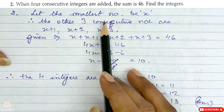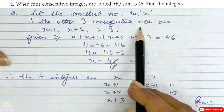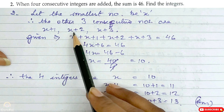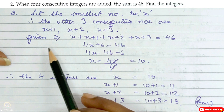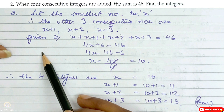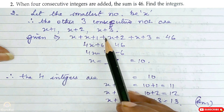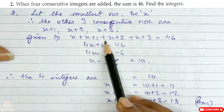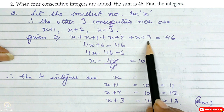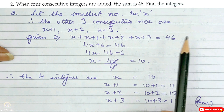Let the smallest number be x. Therefore the other 3 consecutive numbers are x plus 1, x plus 2, and x plus 3. When 4 consecutive integers are added the sum is 46, so x plus (x+1) plus (x+2) plus (x+3) is equal to 46. This is the equation.